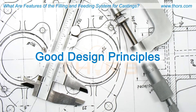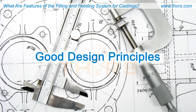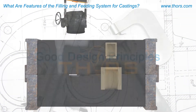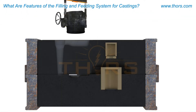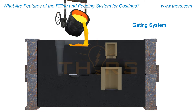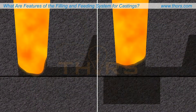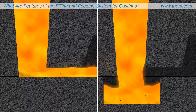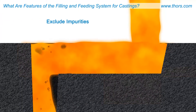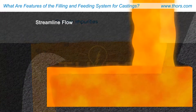Implementing good design principles is fundamental to produce sound castings. The design features encompass the various parts of the mold filling and feeding systems. The mold filling or gating system involves the transport of the molten metal from the ladle into the casting cavity. The filling system aids in completely filling the casting cavity by minimizing air entrapment, excluding impurities, and streamlining metal flow.